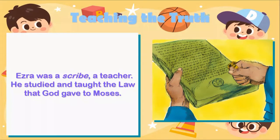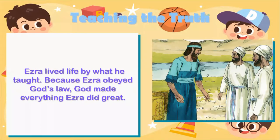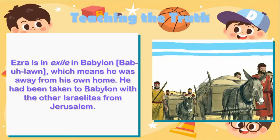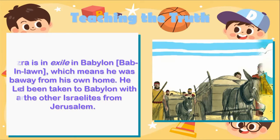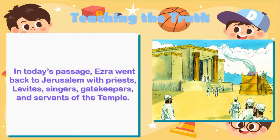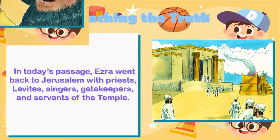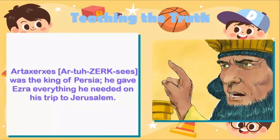Teaching the Truth: Ezra was a scribe, a teacher — he studied and taught the law that God gave to Moses. Ezra lived life by what he taught, and because he obeyed God's law, God made everything Ezra did great. Ezra was in exile in Babylon, away from his own home, having been taken there with other Israelites from Jerusalem. In today's passage, Ezra went back to Jerusalem with priests, Levites, singers, gatekeepers, and servants of the temple.